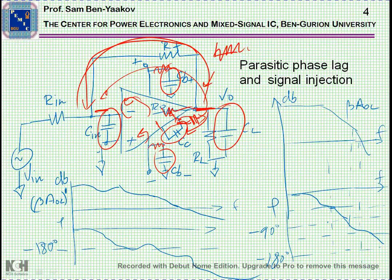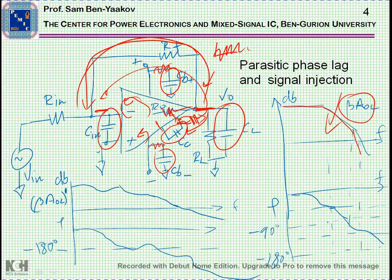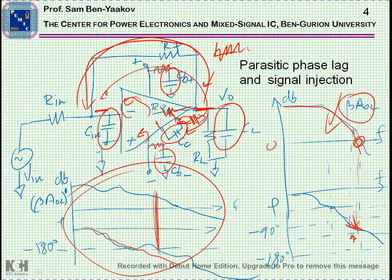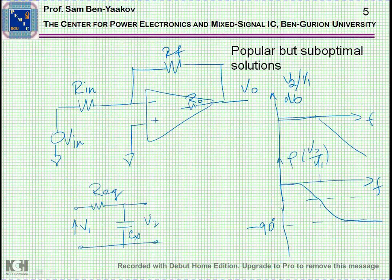So, instead of having a nice situation that is shown here - this will be the closed loop or the loop gain of the amplifier, and it crosses the 0 dB with a phase margin that has maybe sufficient margin to the positive feedback point - you'll get something like this in which the phase sort of goes down and therefore, even here, you already get a reversal of the signal and you get a positive feedback. So, what can be done?